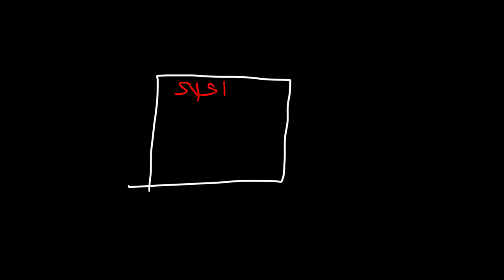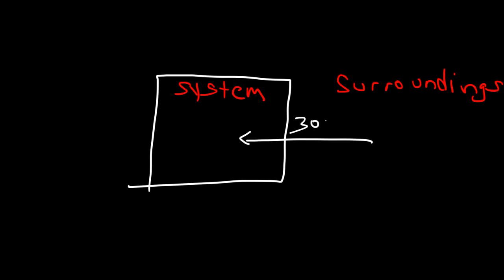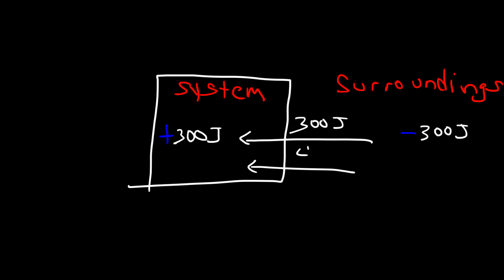If we draw a picture, the box represents the system and everything outside is the surroundings. The system absorbs 300 joules, so the system gains 300 and the surroundings loses 300 joules — this process is endothermic for the system but exothermic for the surroundings. Work done on the system is 400 joules, so the system gains 400 joules of energy but the surroundings loses 400 joules through work. Work is done on the system, but work is done by the surroundings.